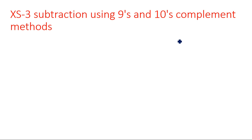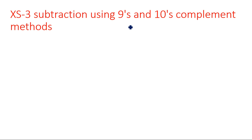We already know 9s and 10s complement methods from the beginning of number systems. 9s complement is nothing but subtracting the given number from 9. Suppose if you are having 2 digits, 99 must be taken; if 3 digits, then 999. So however many digits we have in the number, that many 9s we consider, and subtracting gives the 9s complement. After getting the result, if we add 1, then it will give the 10s complement.